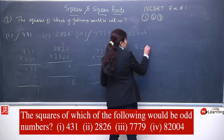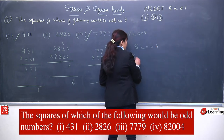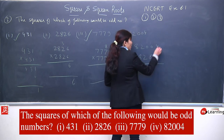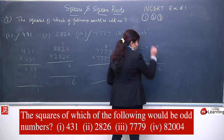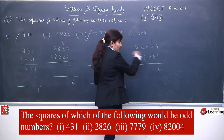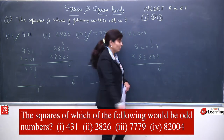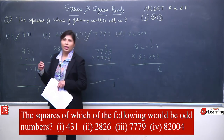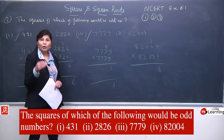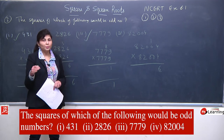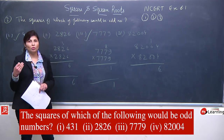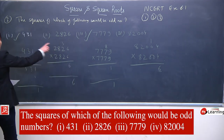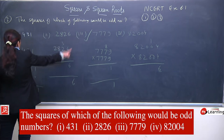82004 ends with 4, and 4 squared is 16, so the number is ending with 6, which is an even number. So you can conclude: the square of an odd number is odd, and the square of an even number is always even. The answer to this question is 1st and 3rd — meaning 431 and 7779 will have odd squares.